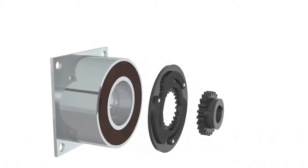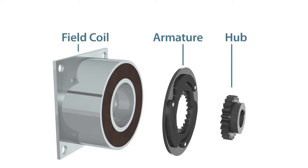The key components of the brake are field coil, armature, and hub.